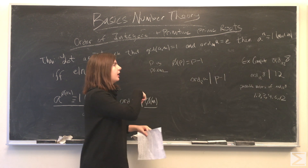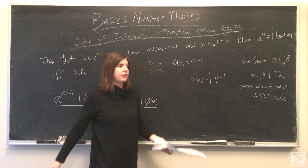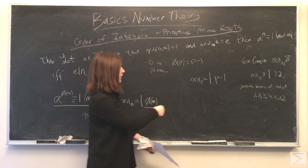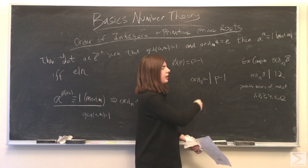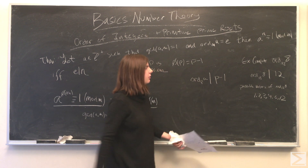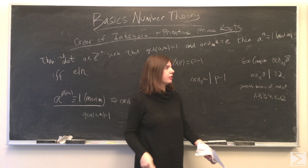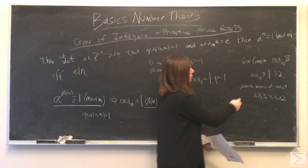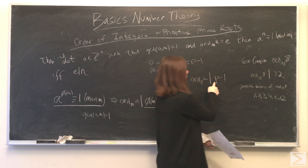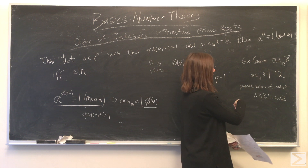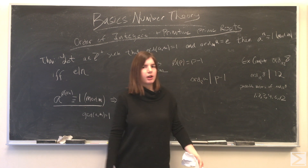If p is prime, phi of p is equal to p minus 1, and this tells us that the order of a modulo p must divide p minus 1. For example, if we're asked to compute the order of 8 modulo 13, we know the order must divide 12, which is p minus 1. So the possible values of this order are 1, 2, 3, 4, 6, and 12.